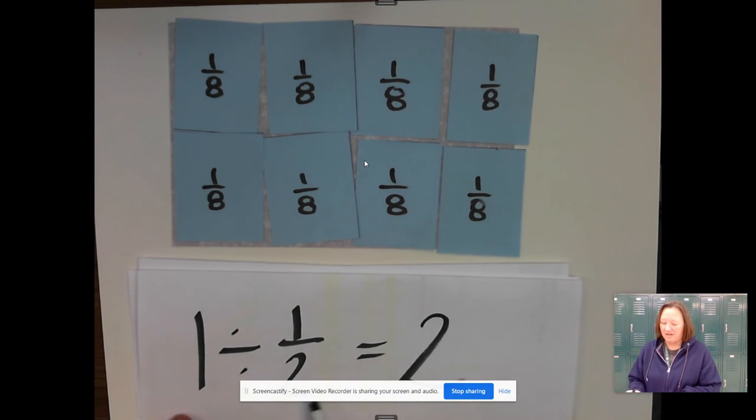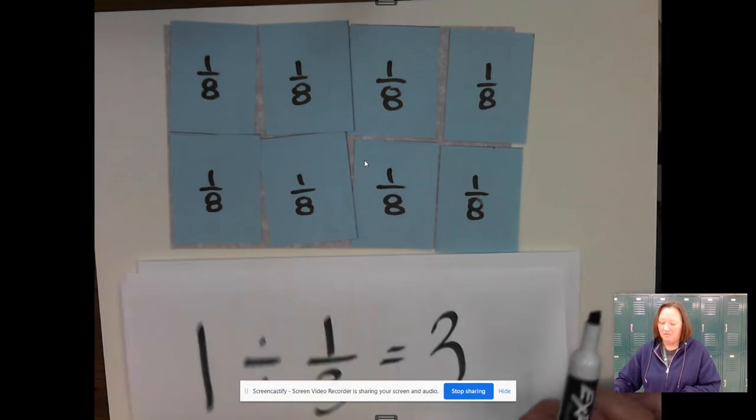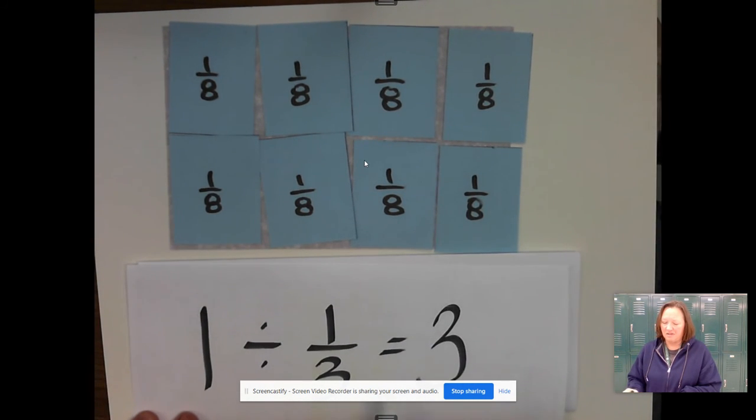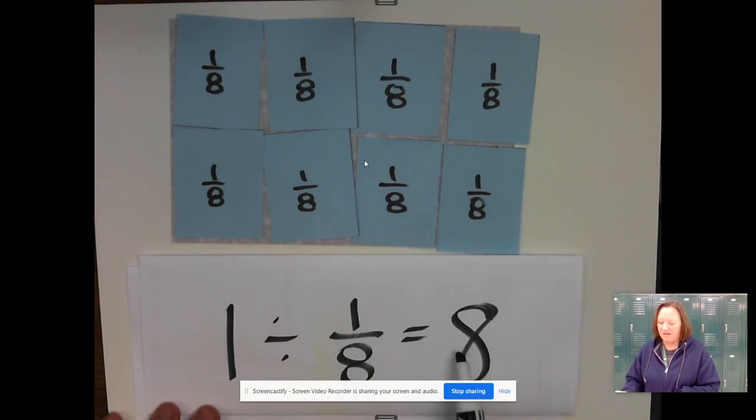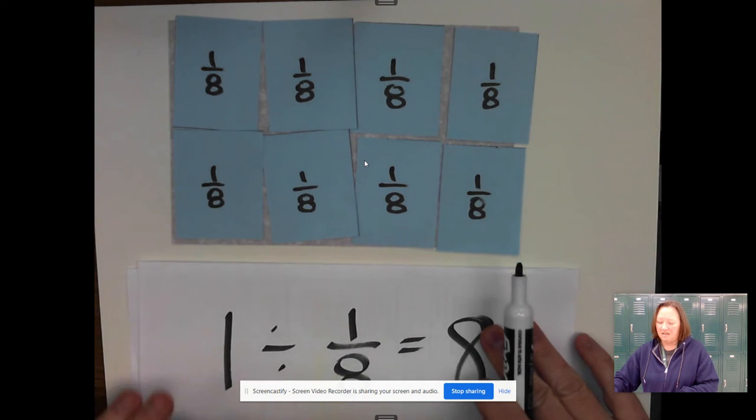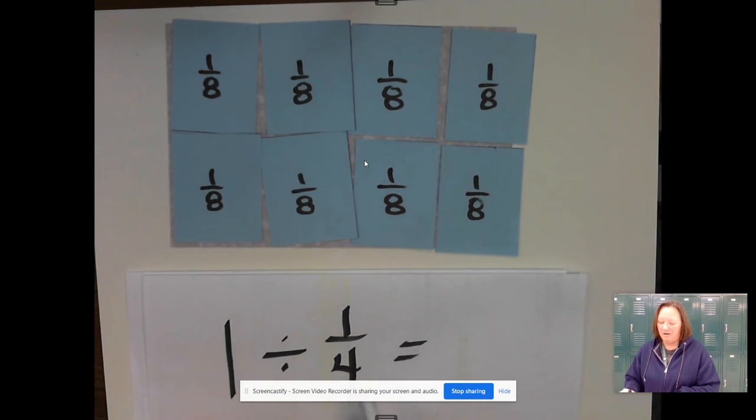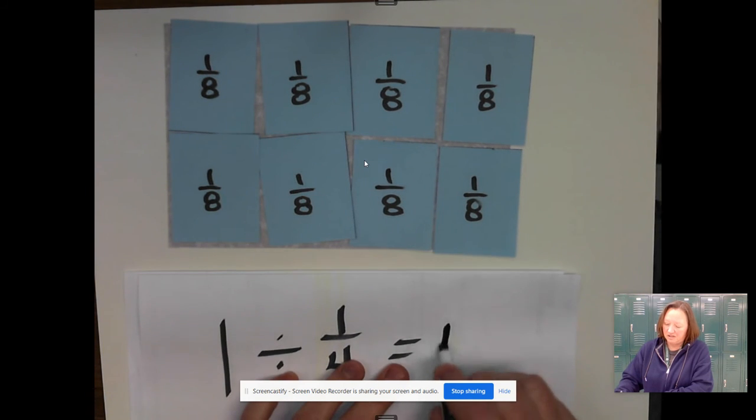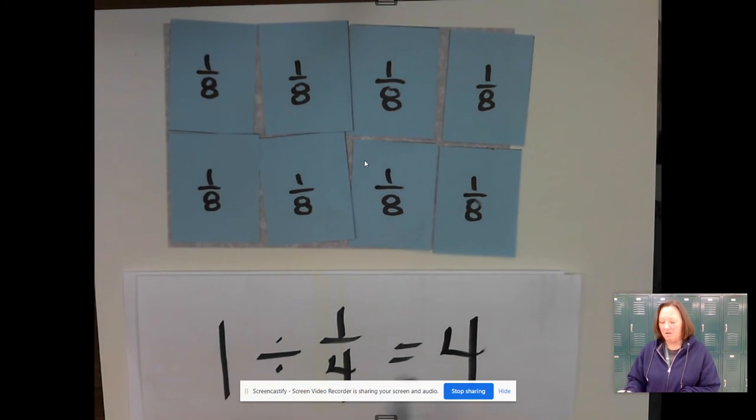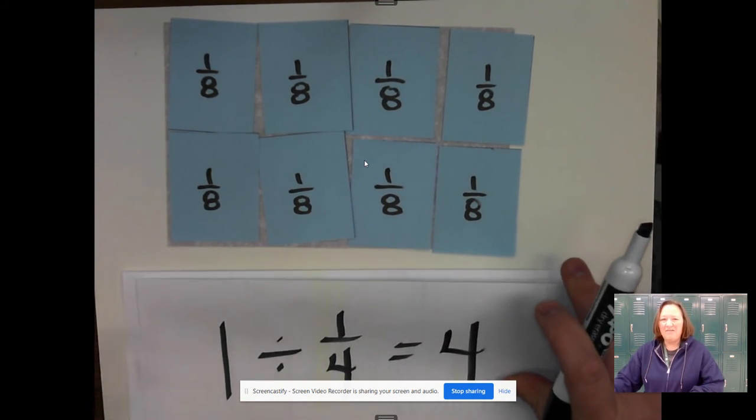If those were neatly placed on there, you would see that it takes eight parts to make a whole. So 1 divided by 1/8 is 8. Now let's look at what's happening. When it was 1 divided by 1/2, our answer was 2. When it was 1 divided by 1/3, our answer was 3. When it was 1 divided by 1/8, our answer was 8. When it was 1 divided by 1/4, did I forget to write that answer in there? It was 4.